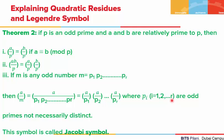We will look at this theorem. Here, p is an odd prime and a and b are relatively prime to p. In that case, (a/p) = (b/p) if a ≡ b (mod p). In the second point, if the numerator is a product of integers — say ab — then (ab/p) equals (a/p)·(b/p).